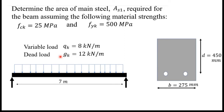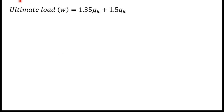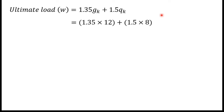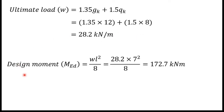First we have to find the ultimate load W. We use the equation: W = 1.35·GK + 1.5·QK, where GK is the dead load and QK is the variable load. Substituting the given values and simplifying, we get W = 28.2 kilonewtons per meter.